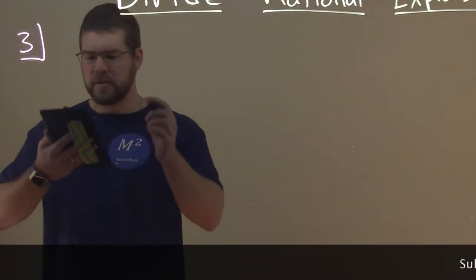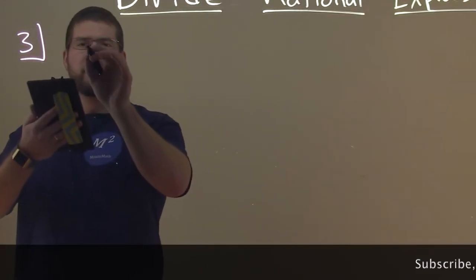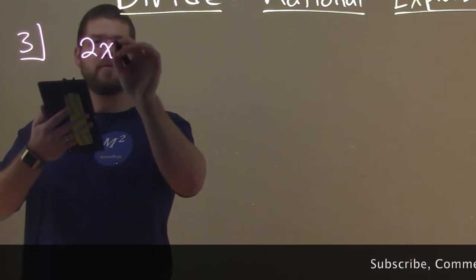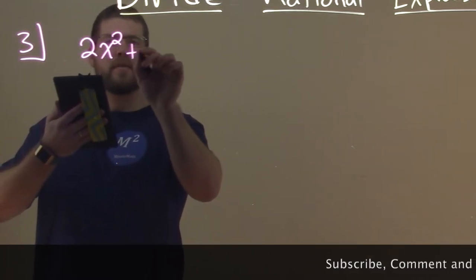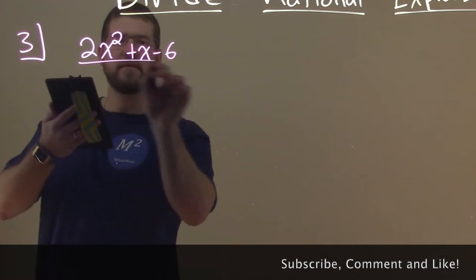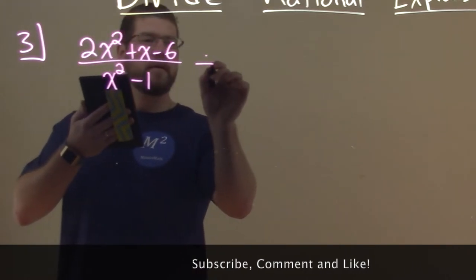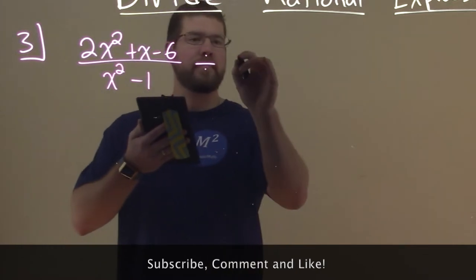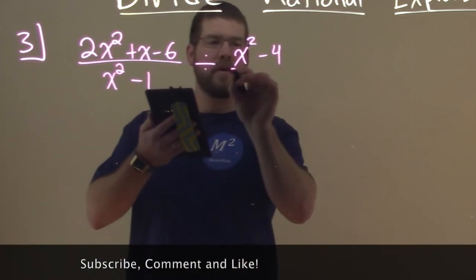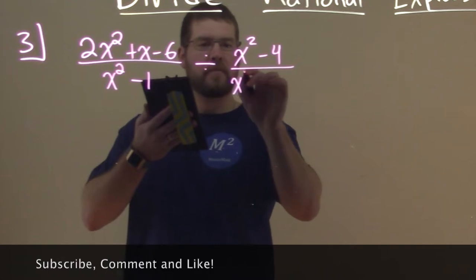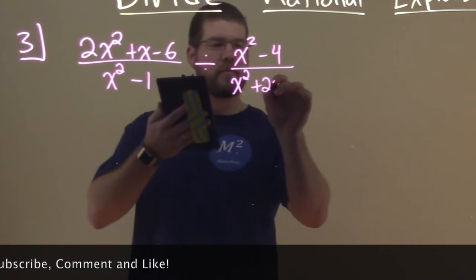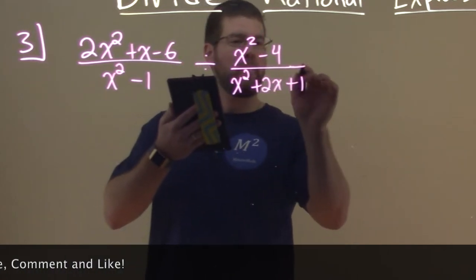You'll see rational expressions for division like this sometimes: 2x squared plus x minus 6 over x squared minus 1, divided by x squared minus 4 over x squared plus 2x plus 1.